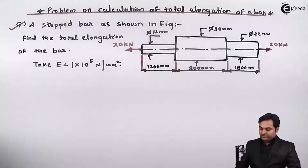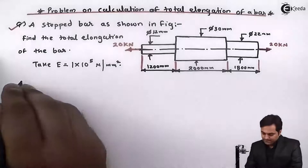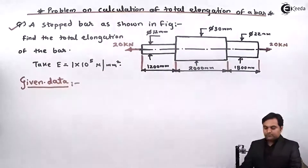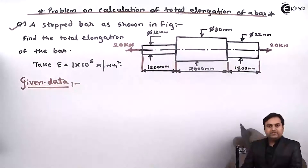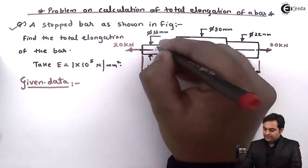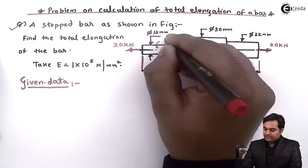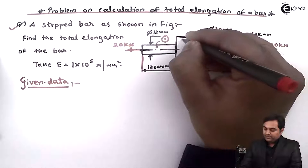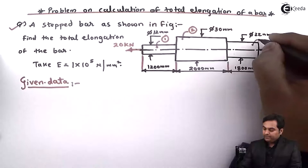Now first of all, let us write the data for this question. The stepped bar is given. I will name the section with diameter 12 mm as section 1, diameter 30 mm as section 2, and diameter 22 mm as section 3.